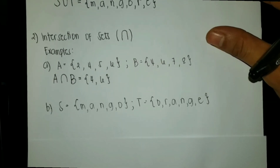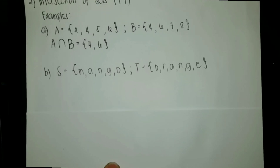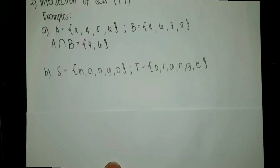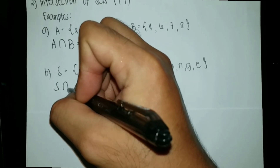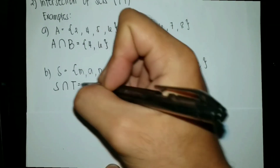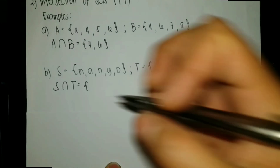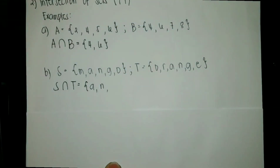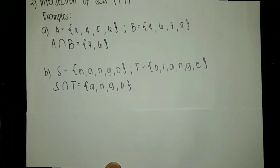Another example. We have sets S and T with the elements M, A, N, G, O on set S, and O, R, A, N, G, E on set T. Let us find S intersection T. That will be the set with the elements that are common to S and T. So we have A, N, G, and O. That is the intersection of sets.